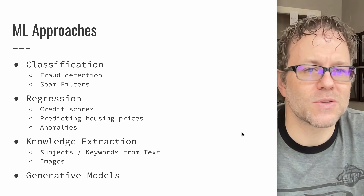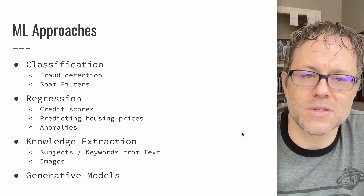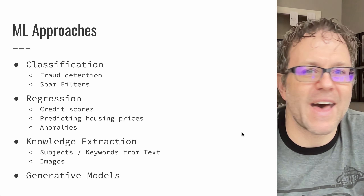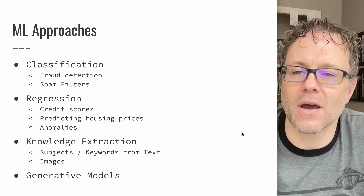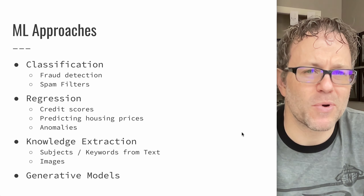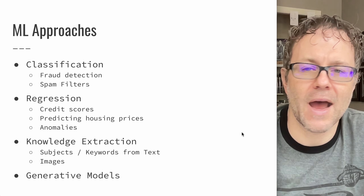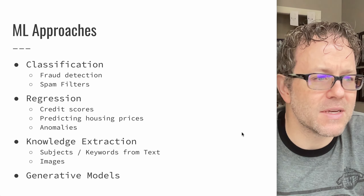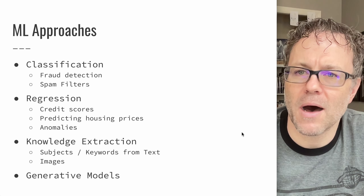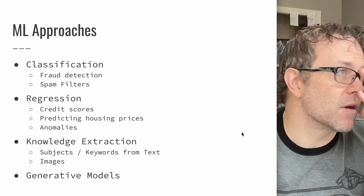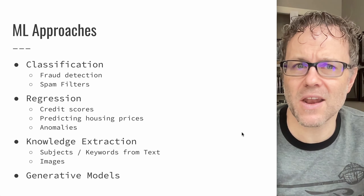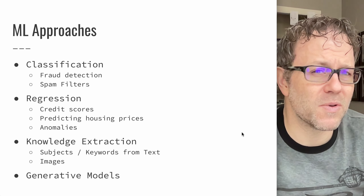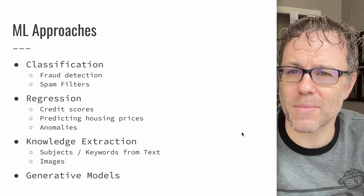Regression applications, like credit scores — scoring someone's credit or classifying somebody into different credit ratings. Predicting housing prices can be an application of regression. You might have to think about the anomalies and how you handle them. If you have something that doesn't fit the data or a pattern, or is out of the range of what you're expecting, do you even try to do a prediction or do you just stop everything at that point?